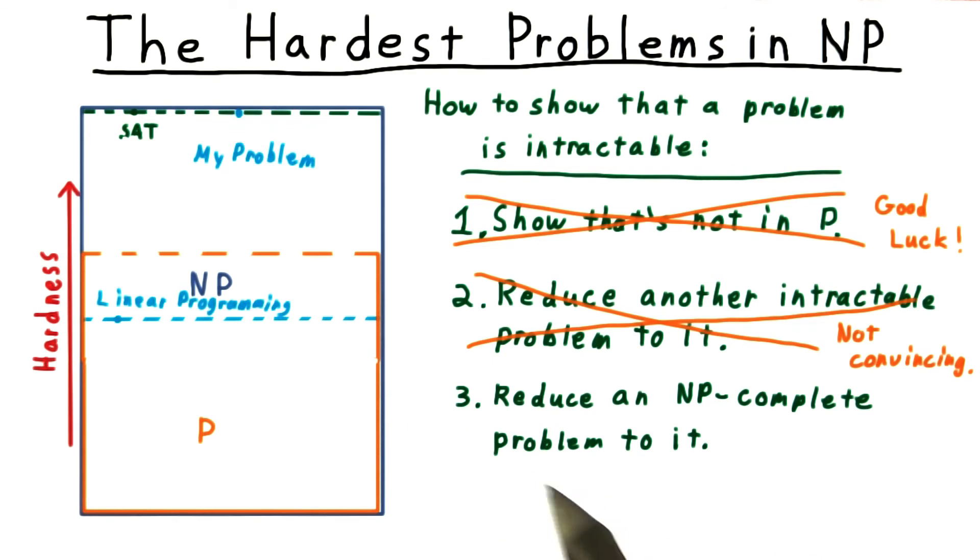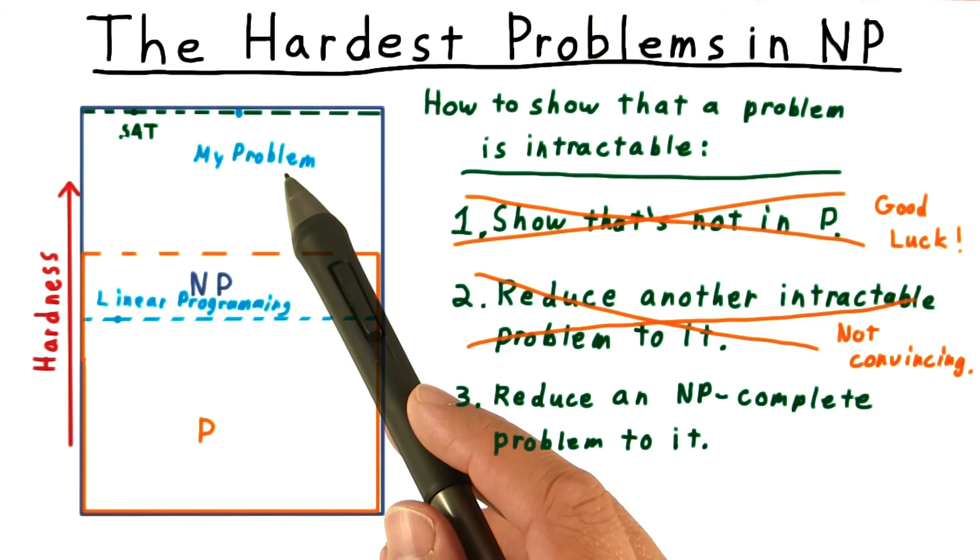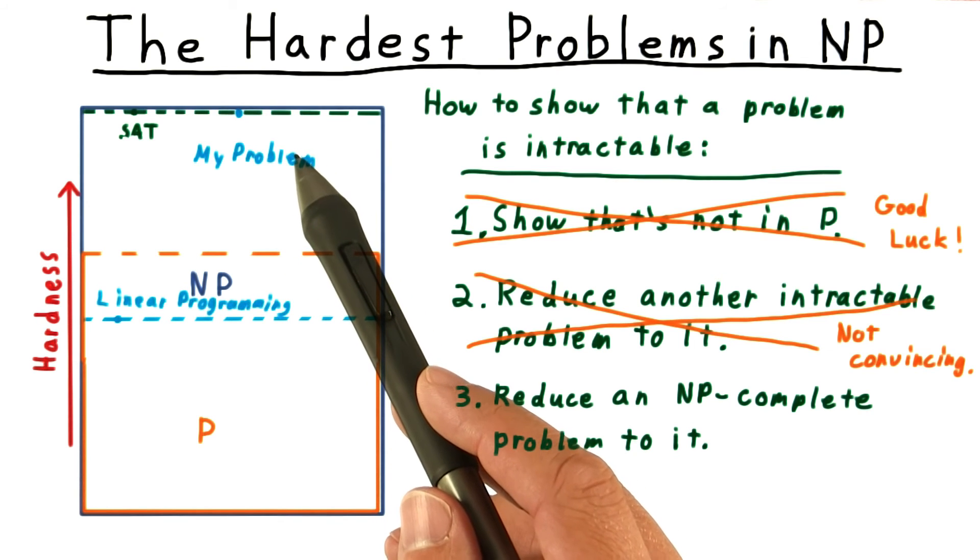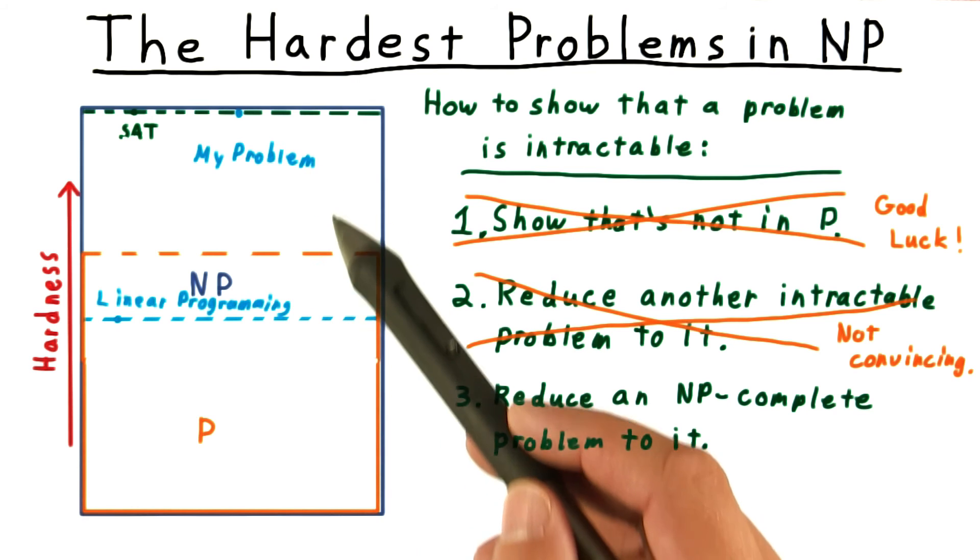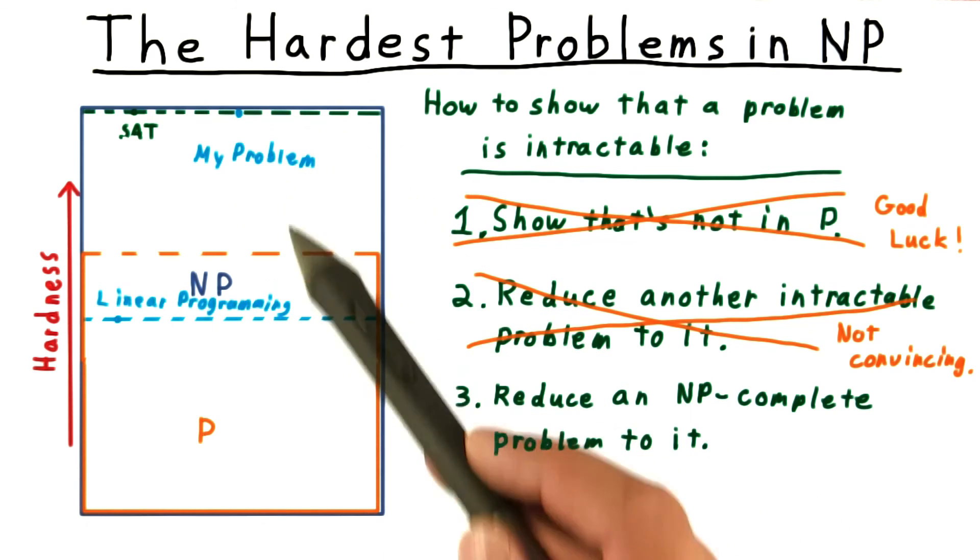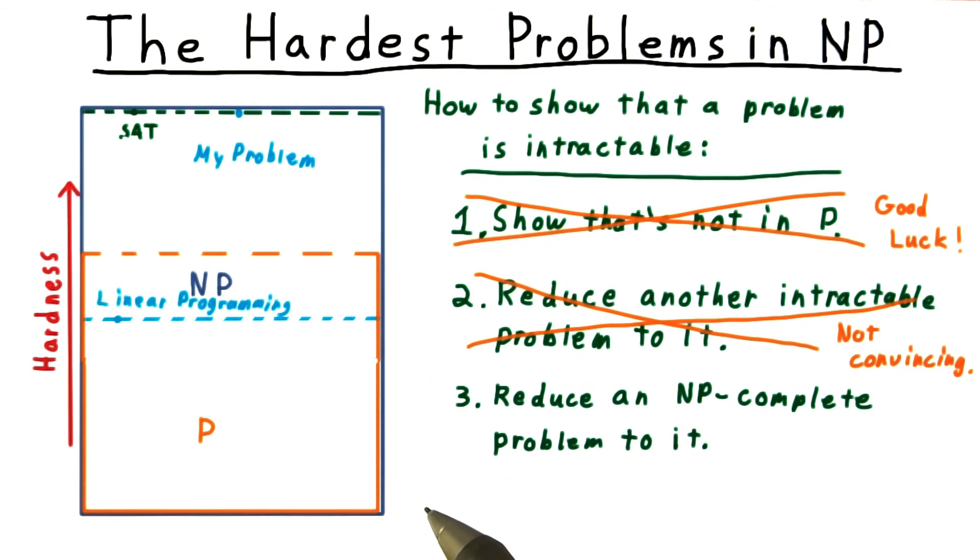Turning back to how to show that your problem is intractable, short of proving that P is not equal to NP, the best we can do is reduce an NP-complete problem like SAT to your problem. Then your problem would also be NP-complete, and the only way that your problem could be polynomially solvable is if this line moves up here and everything in NP is polynomially solvable.